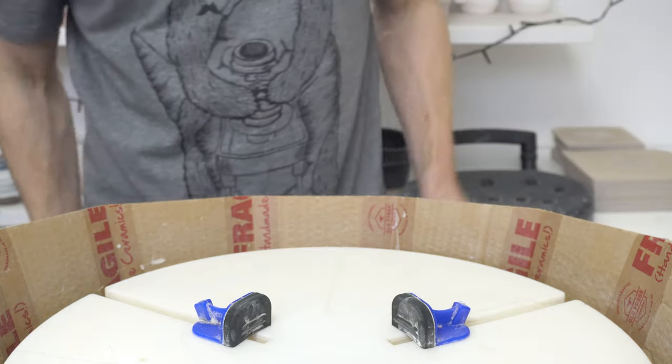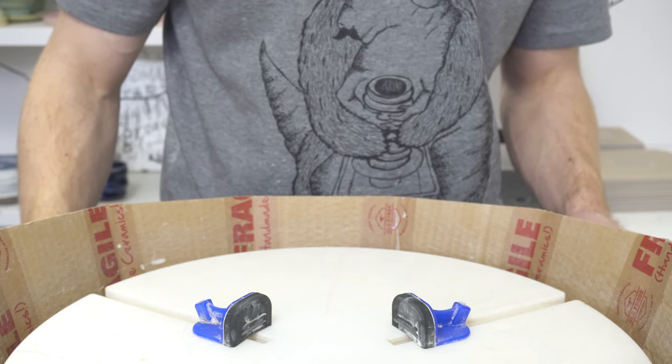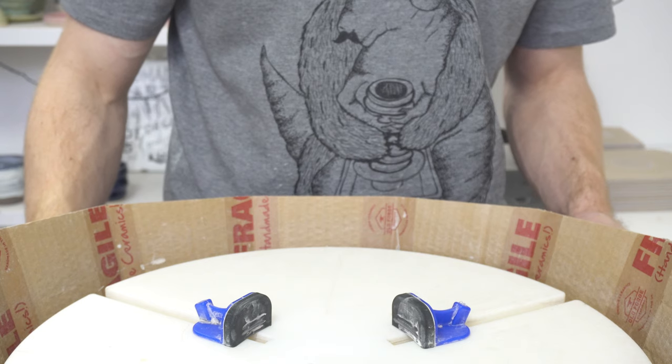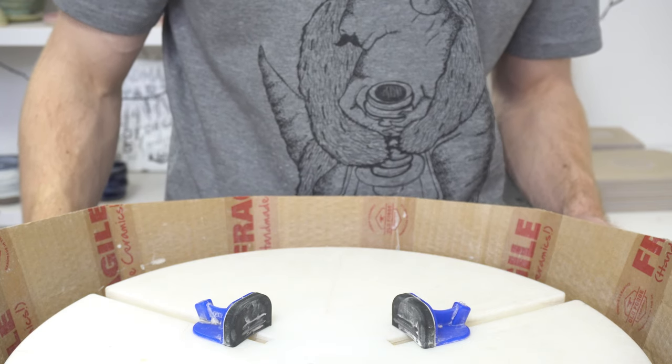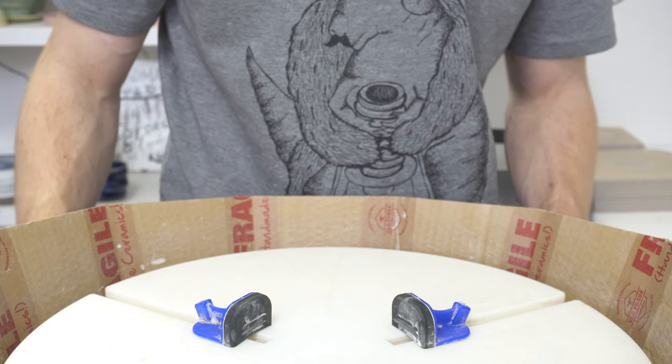The cheap ones are fine. They'll last you, I think I probably replaced a set kind of once a year. But you do have to make sure you're not using the bits that go rusty once you've worn through the veneer, because then you'll start to put iron on your clay.